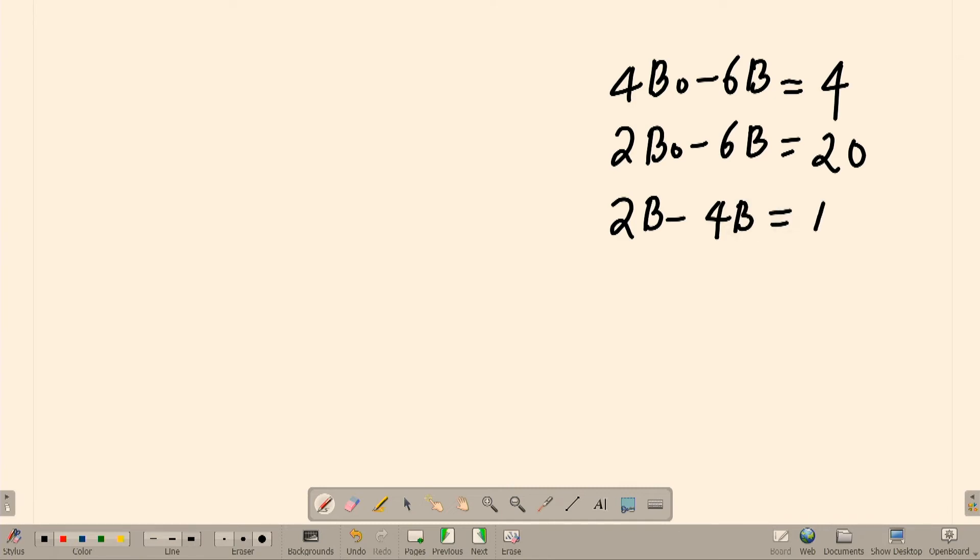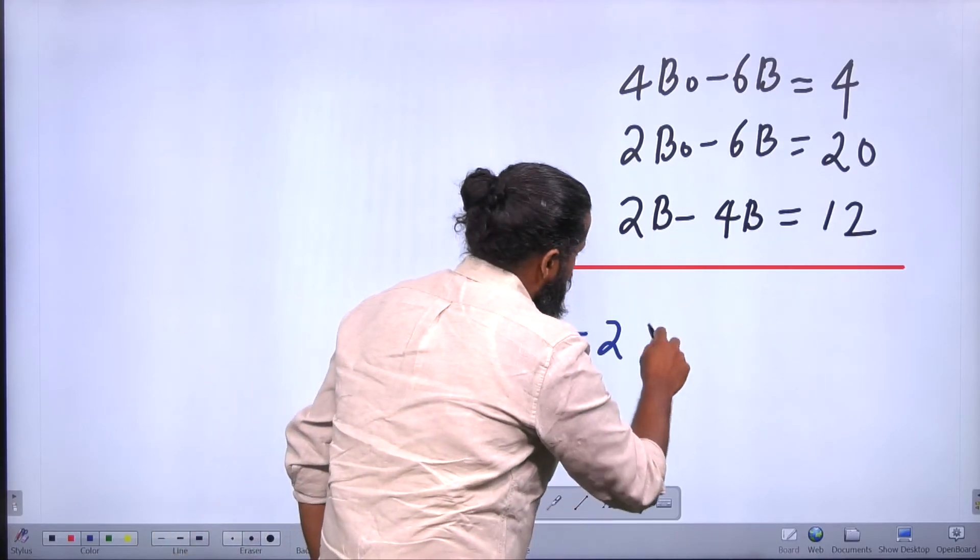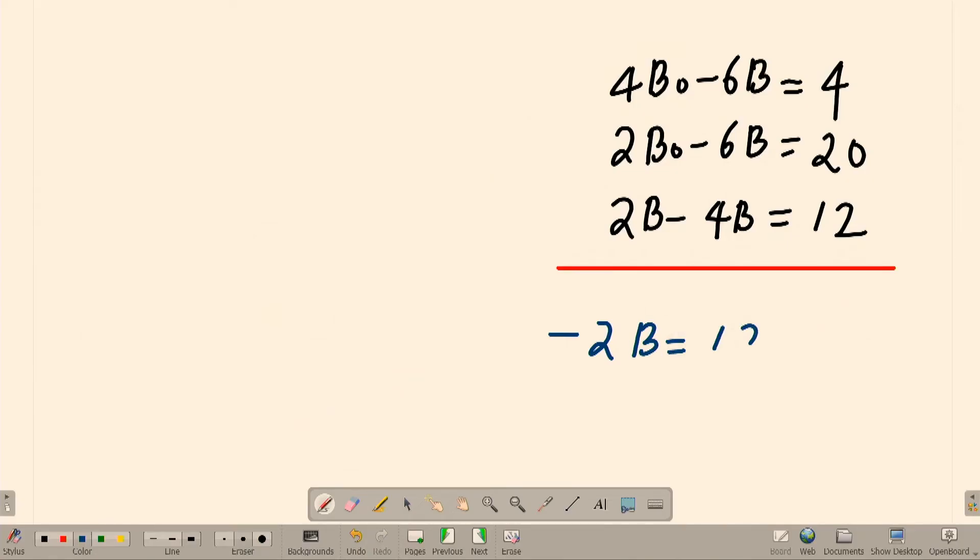We can compare all these equations and come to the solutions. First of all, the last one: all of you look here, 2B - 4B, that means -2B is going to be equal to 12. That means you are getting the magnitude of B as -6.